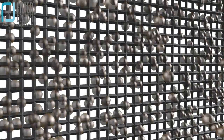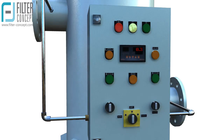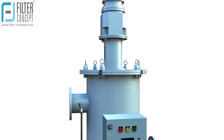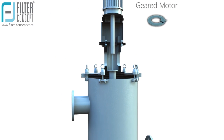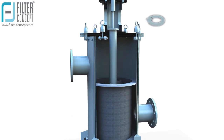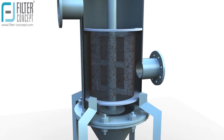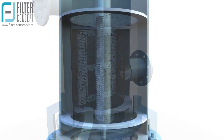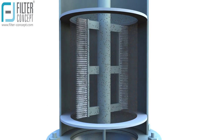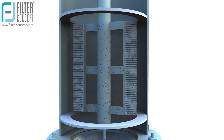When the filter runs for a certain time, the filter element pores get clogged by impurities. When the differential pressure reaches its preset value, the gear motor drives the scrapper and the particles are skimmed from the element surface.